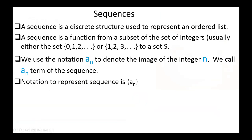First, sequences. A sequence is a discrete structure used to represent an ordered list. It's a function from a subset of the set of integers, usually either the set {0, 1, 2, ...} or the set {1, 2, 3, ...} to a set S. We use the notation a_N to denote the image of the integer n, and we call a_N a term of the sequence. The notation to represent a sequence is {a_N} in curly brackets — the same notation used to represent sets. We distinguish between them by the context in which they are used.